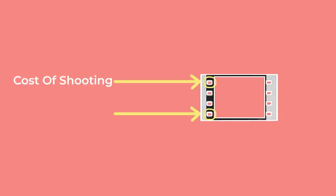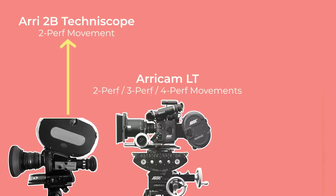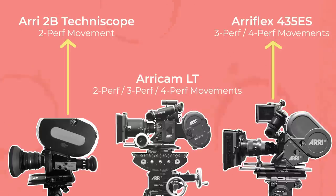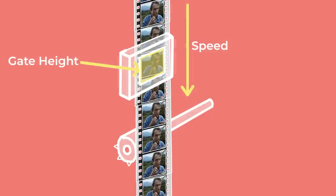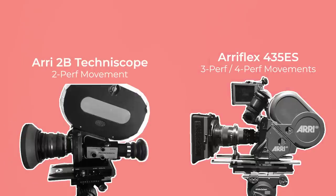Perfs affect both the cost of shooting as well as the quality or fidelity of the image. The motion picture camera must be specifically set to record frames with a certain number of perfs, by adjusting the speed at which the film runs through the camera as well as the height of the gate that lets through light. Most cameras can record either 4 perf or 3 perf, while only specific cameras can record 2 perf frames.